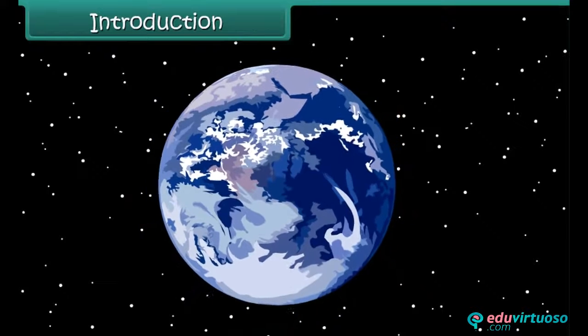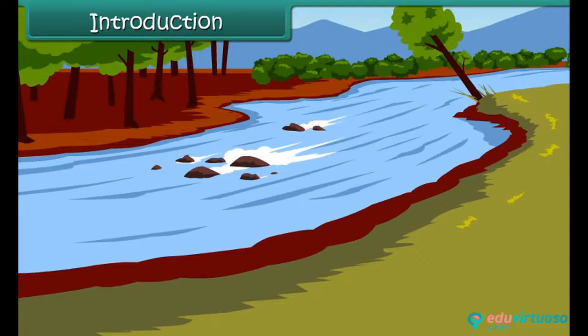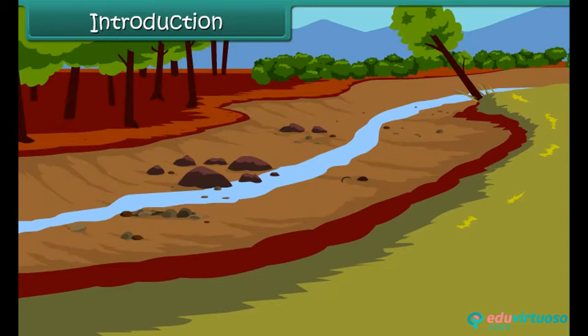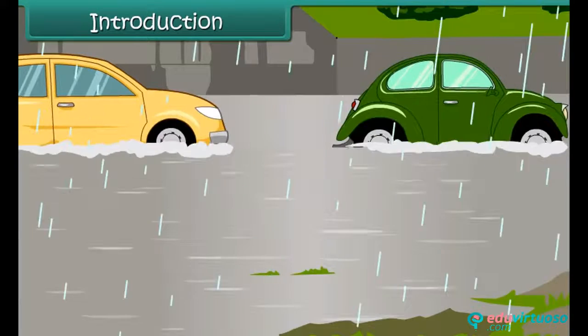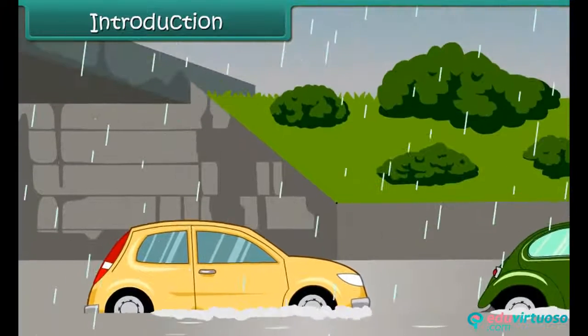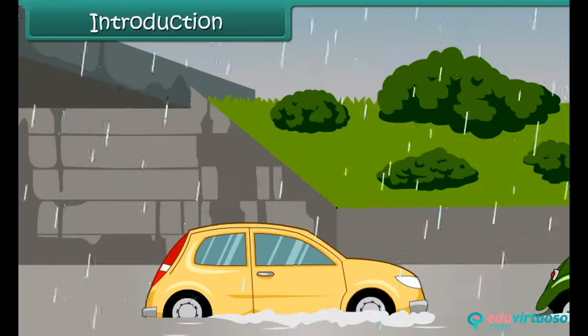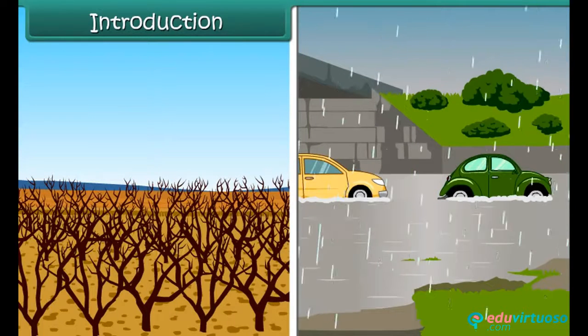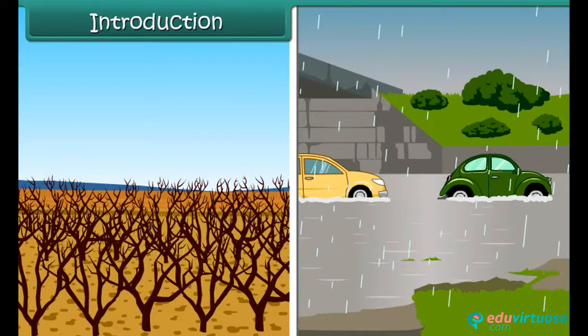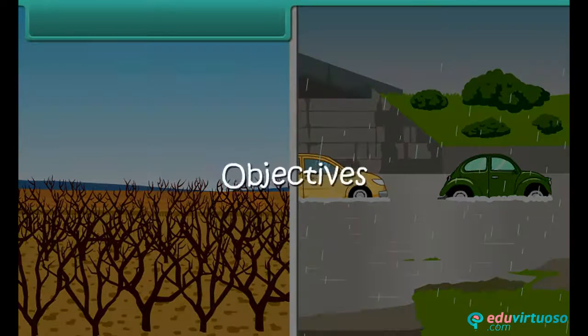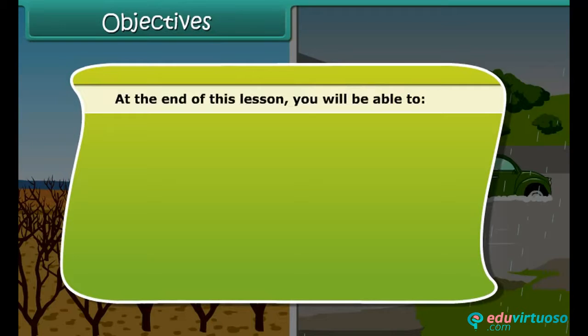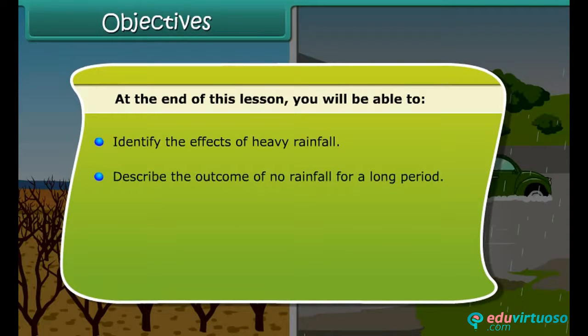Earth is known as the blue planet because of the abundance of water on its surface. In fact, 70% of Earth's surface is covered by water. However, in summer everyone talks of shortage of water — strange, isn't it? What is even more strange is that a couple of months later during monsoon, we talk of floods. In this lesson, we will learn about the effects of droughts and floods on Earth and the ways to overcome these problems. At the end of this lesson, you'll be able to identify the effects of heavy rainfall, describe the outcome of no rainfall for a long period, and explain rainwater harvesting.